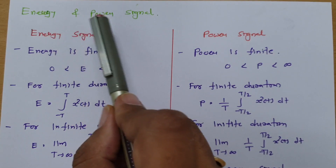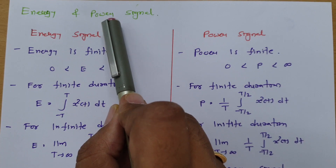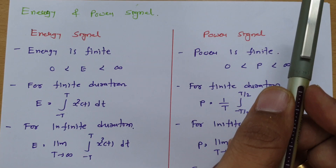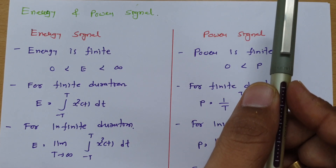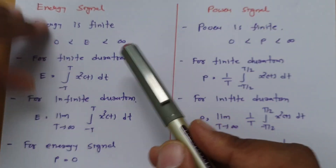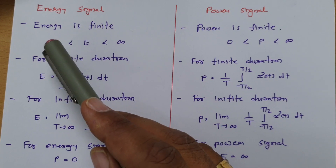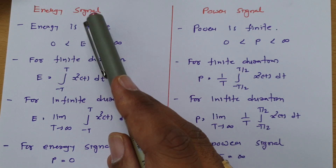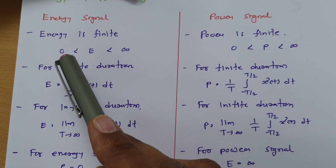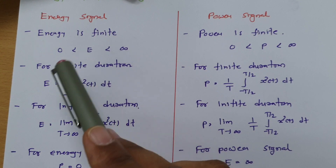A given signal may not be an energy or power signal, but if it is an energy signal then it cannot be a power signal, and if it is a power signal then it cannot be an energy signal. Now let us begin with a comparison. If you calculate the energy of a given signal and it is finite — meaning non-zero and finite — then we can say that given signal is an energy signal.